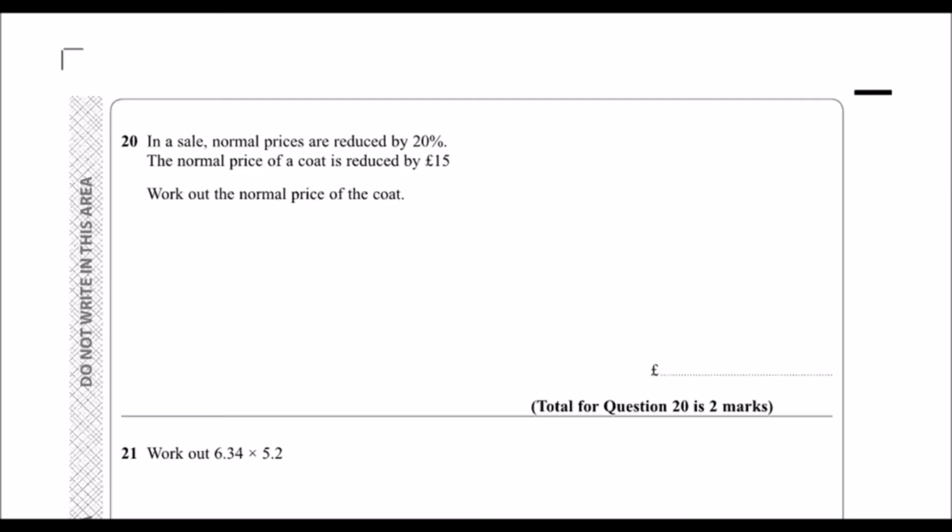Question 20. In a sale, normal prices are reduced by 20%. The normal price of a coat is reduced by £15.